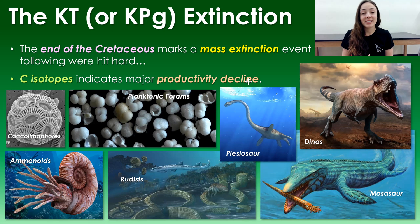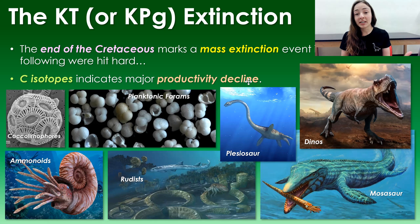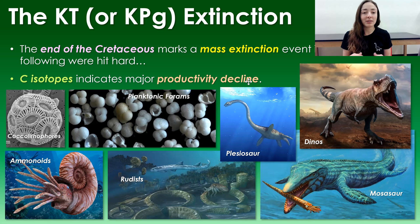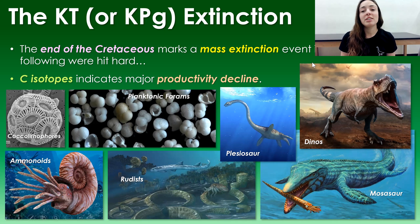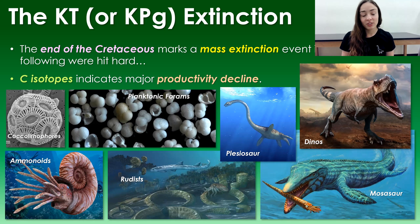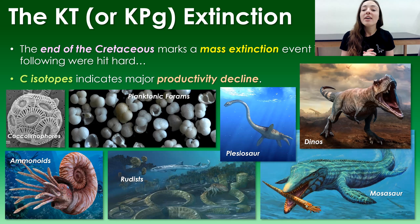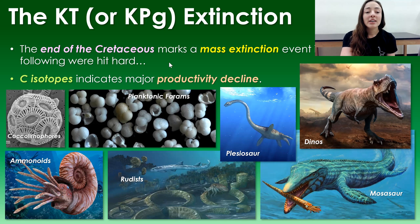This extinction event is called the KT or KPG extinction, depending on whether you call it the Cretaceous-Tertiary or Cretaceous-Paleogene Boundary. Either way, it was a major mass extinction event — one of the big five — in which the following groups of organisms were hit super hard.